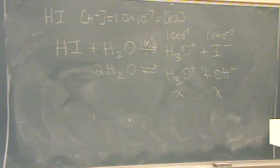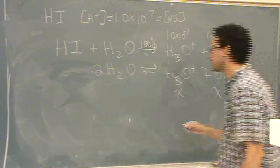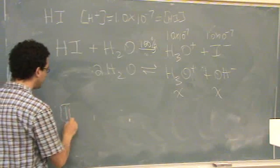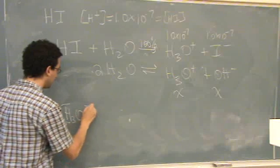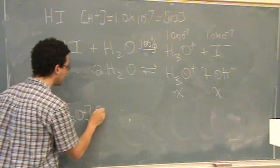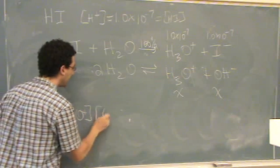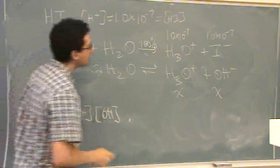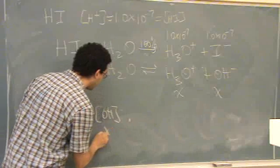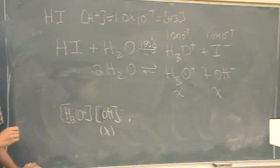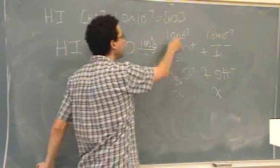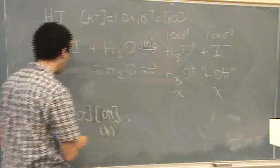Okay. So now what you do is you kind of put this together and you say H3O plus concentration plus the hydroxide concentration. Well, the hydroxide is just going to be x. But the H3O plus is contributing some amount from the Kw and then this amount from the original.